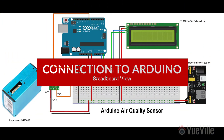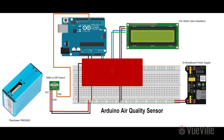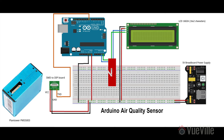A tip on powering the sensor and the LCD display: I recommend using an external 5-volt power supply or a breadboard power supply source like I did for the sensor and LCD display. Powering both from the Arduino can cause stability issues and even LCD display errors.